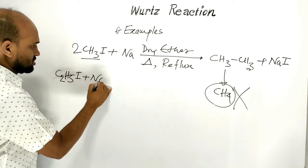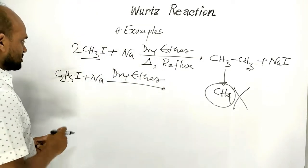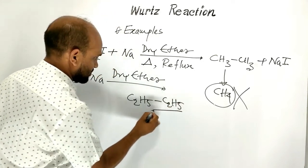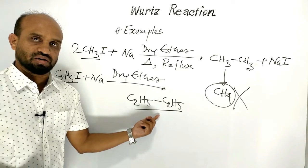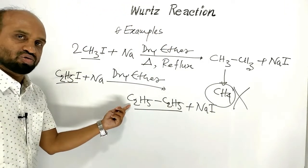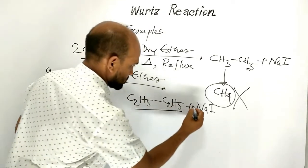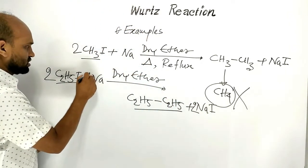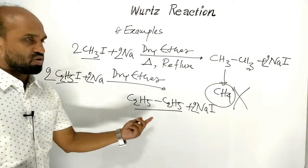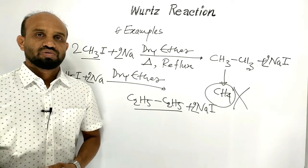Second example: ethyl iodide reacts with sodium in dry ether. Two ethyl groups undergo self-coupling, butane is produced as a higher alkane, and sodium iodide is formed as by-product. The balanced equation uses two molecules of ethyl iodide and two sodium atoms. It is observed that alkanes having an even number of carbon atoms are produced through Wood's reaction.